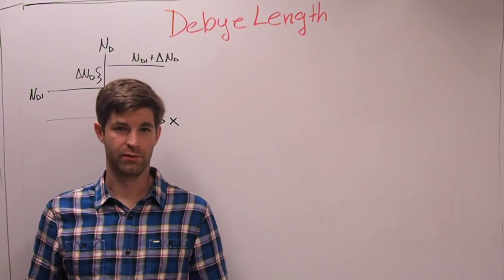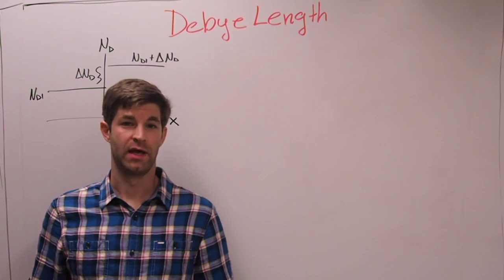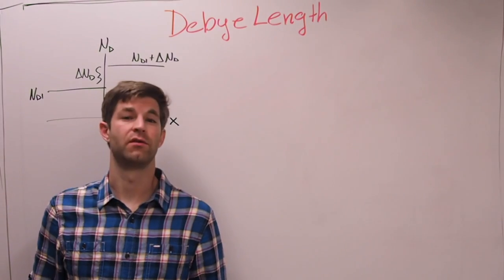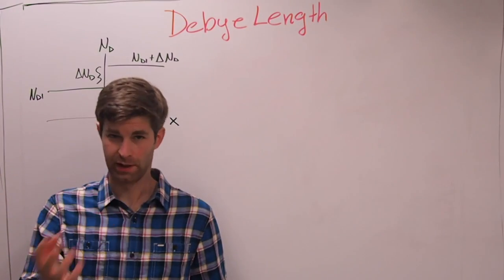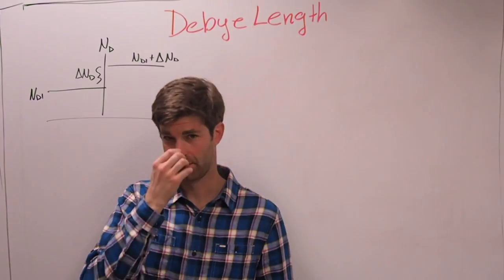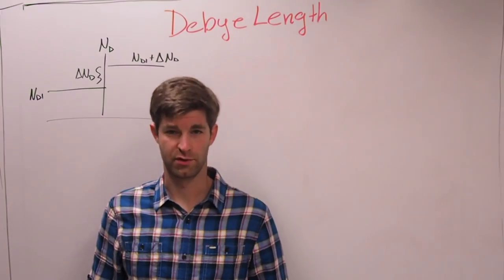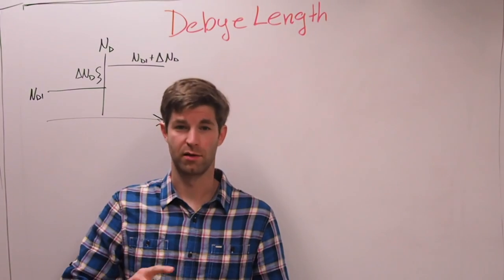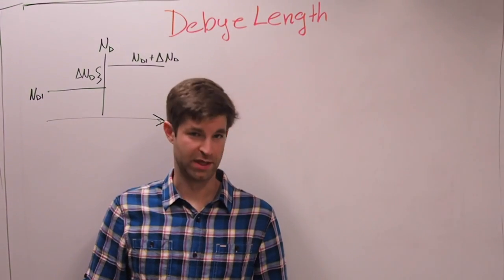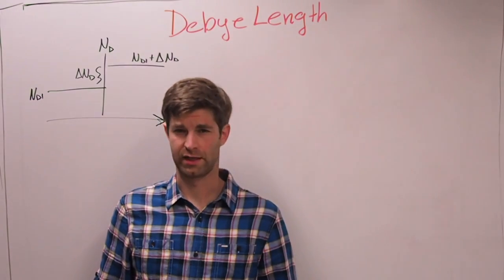We are getting ready to go into talking about PN junctions and about abrupt changes in doping in semiconductors, which is going to lay the basis for some pretty important stuff that we're going to get into in the future, such as MOSFETs, BJTs, PN diodes, stuff like that.